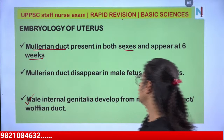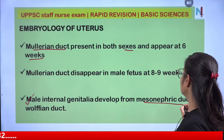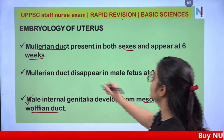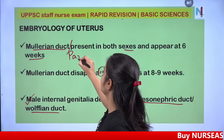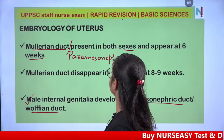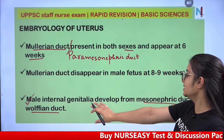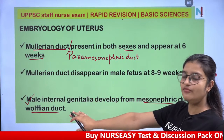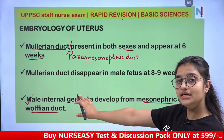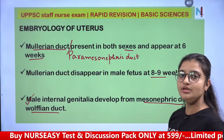Male internal genitalia develops from the Mesonephric duct, also known as the Wolffian duct. The Mullerian duct's other name is the para-mesonephric duct. Female internal genitalia develops from the Mullerian duct. Mullerian duct is present in both sexes, then disappears in male fetus around 8 to 9 weeks.